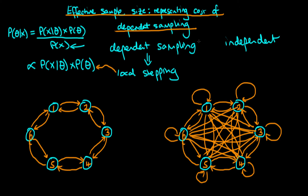You might ask: what do we prefer out of a dependent sampler and an independent sampler? Say for example we've got 50 samples from an independent sampler and 50 samples from a dependent sampler — which should we prefer? Hopefully it's intuitive that the same number of samples from an independent sampler are worth more informationally, because the incremental information obtained from each extra sample for a dependent sampler is less.